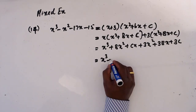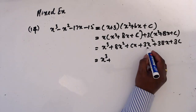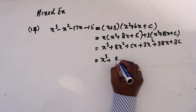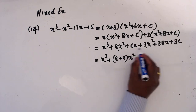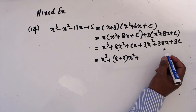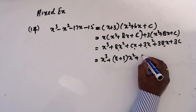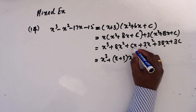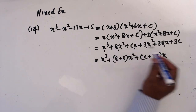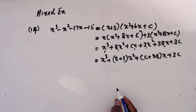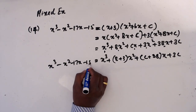Expanding: x³ + bx² + cx + 3x² + 3bx + 3c. Collecting like terms: x³ plus (b + 3)x² plus (c + 3b)x plus 3c. This equals x³ + x² - 17x - 15.